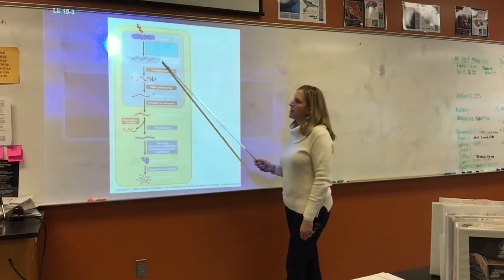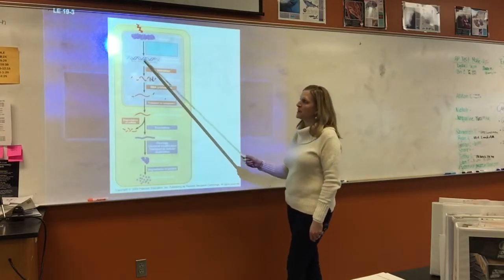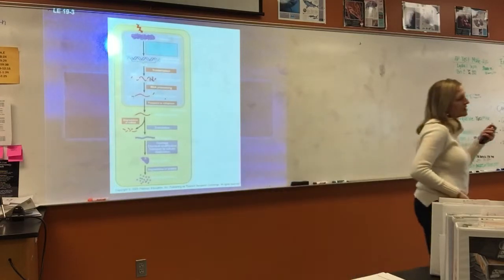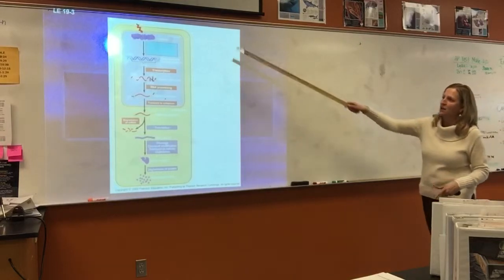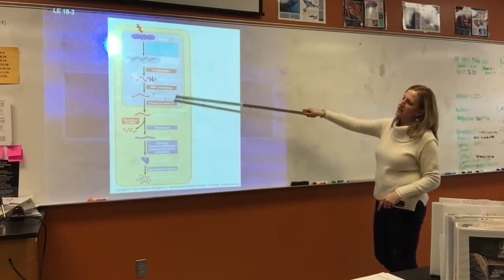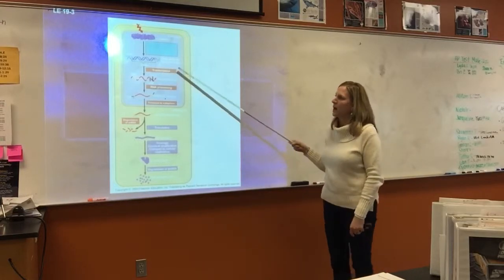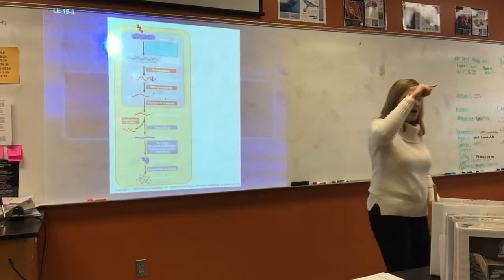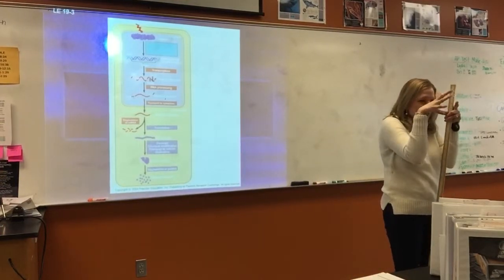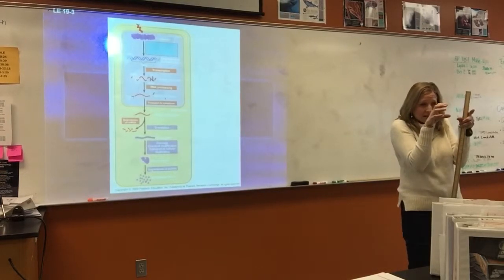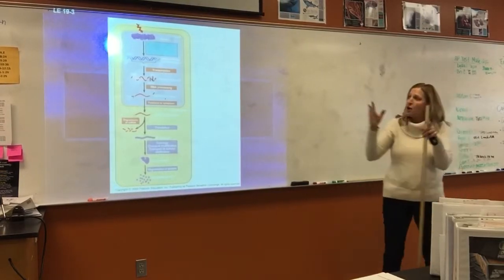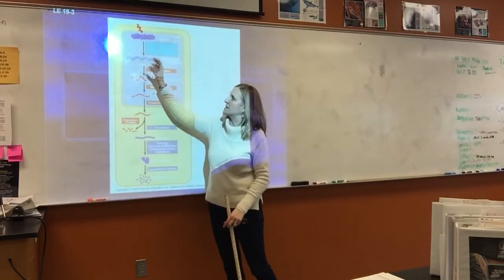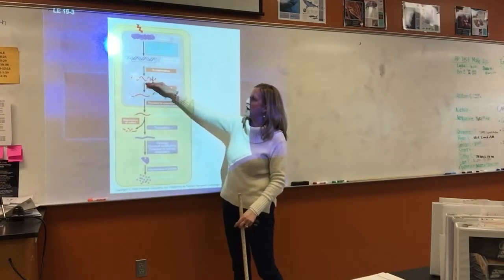The first step in gene expression is the gene being able to be transcribed — is the gene available for transcription? Remember, sometimes when the DNA is wrapped around the proteins and it's tightly packed together, the enzymes don't have access to the DNA and therefore it can't be expressed. Does the gene have availability so that RNA polymerase can bind and make the mRNA in the first place?